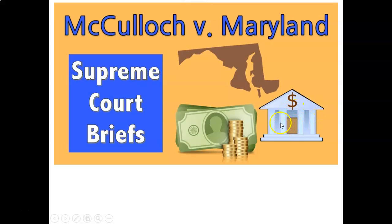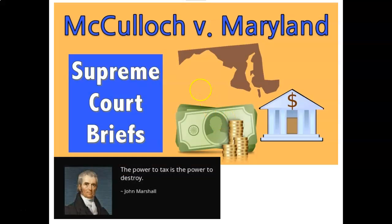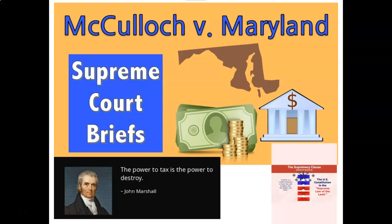The other issue was whether or not Maryland, a state, could tax the federal government because they were having national banks in Maryland. Maryland said if you're not a state bank, then we're going to tax you. Two issues, two outcomes. States could not tax the federal government because of the Supremacy Clause, which says that the Constitution and federal laws are higher than any state law. John Marshall, stating that the power to tax is the power to destroy, said states could not destroy the federal government. The other outcome was that because of the Necessary and Proper Clause, the federal government had the right to create banks because it was necessary and proper.